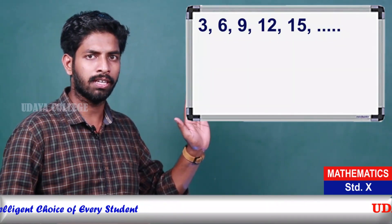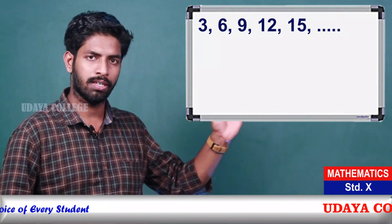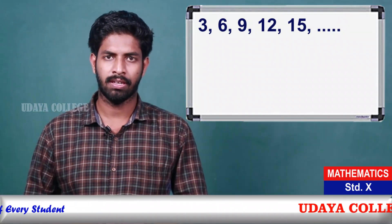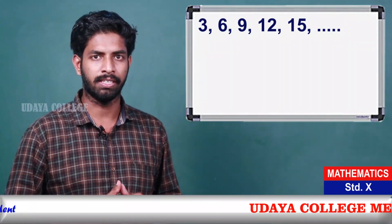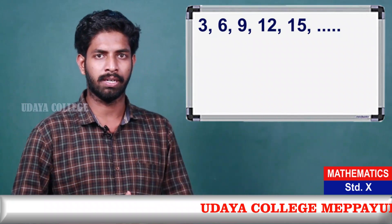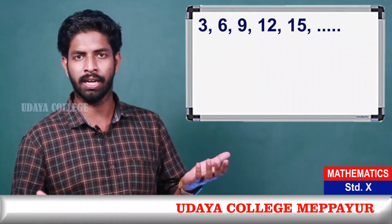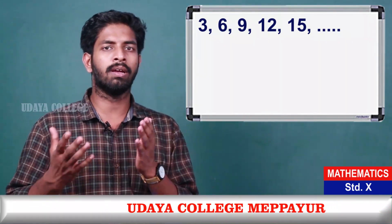The next example is: 3, 6, 9, 12, and so on. 3, 6, 9, 12, and so on. How do we do this?